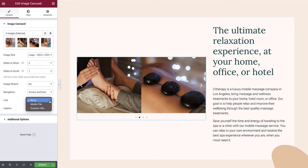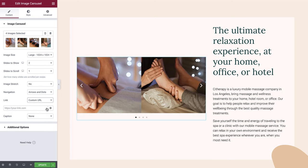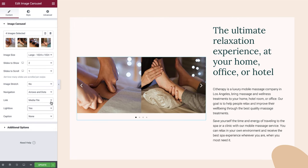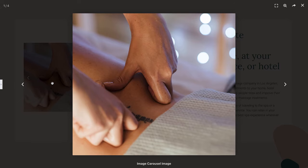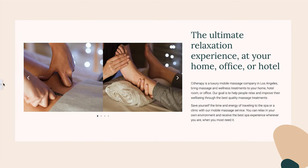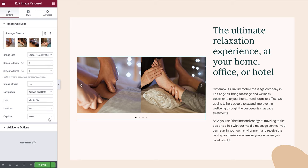We also have media file and custom URL link options. Selecting custom URL opens a new field where you can specify a URL for your carousel to link to. For our demo we're going to link to a media file using Lightbox. When we select media file, a new field appears called Lightbox and we'll set this to yes. Now when we click the image it opens the Lightbox pop-up, which adds a great level of interactivity to our design. Finally, we'll leave the caption set as none.